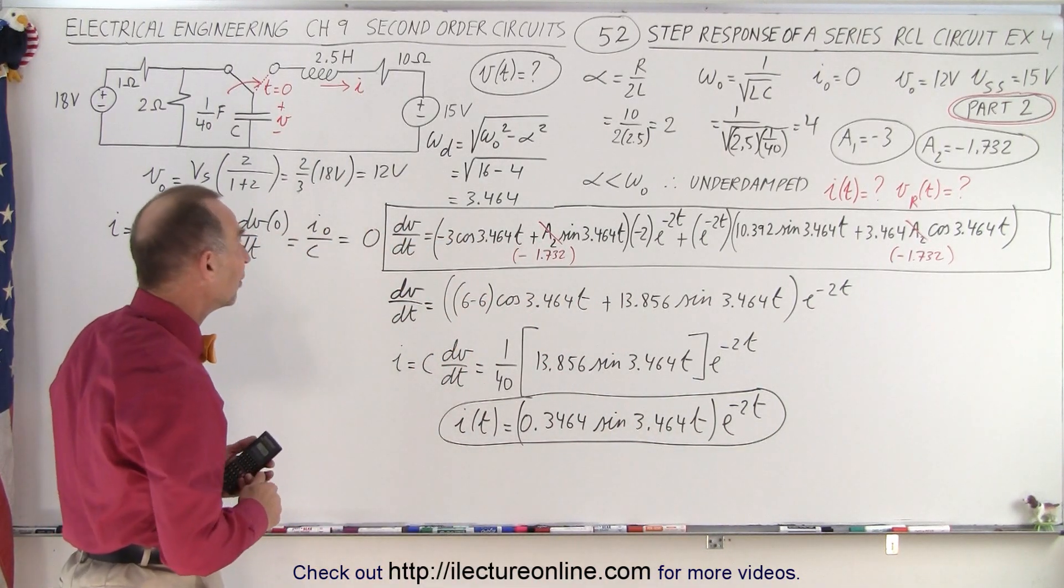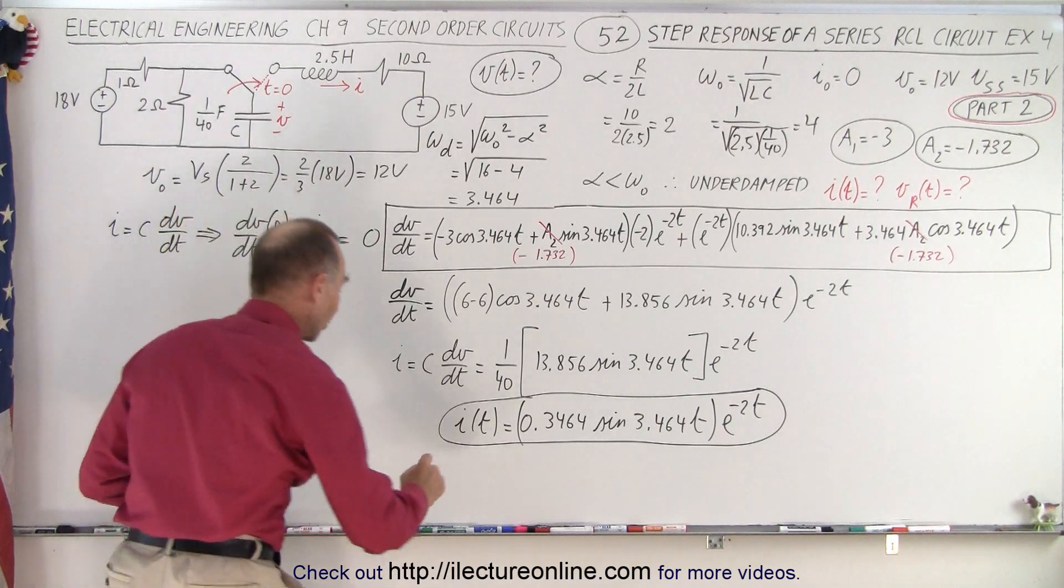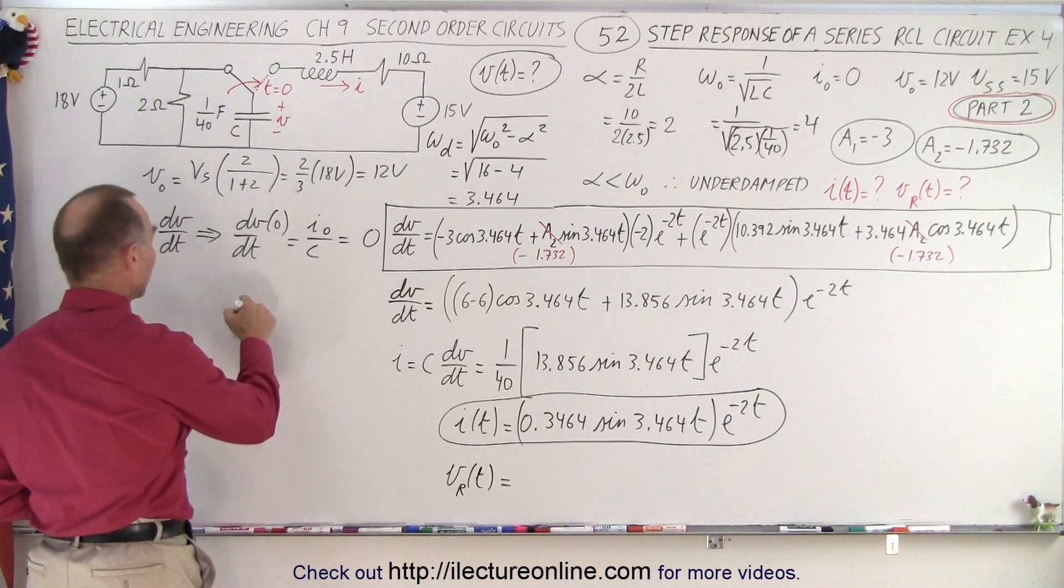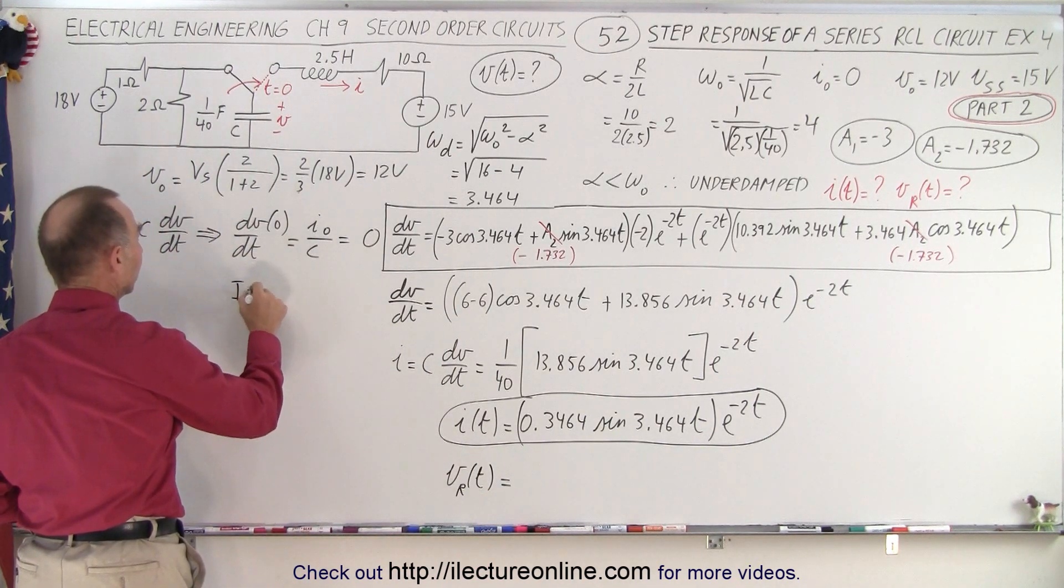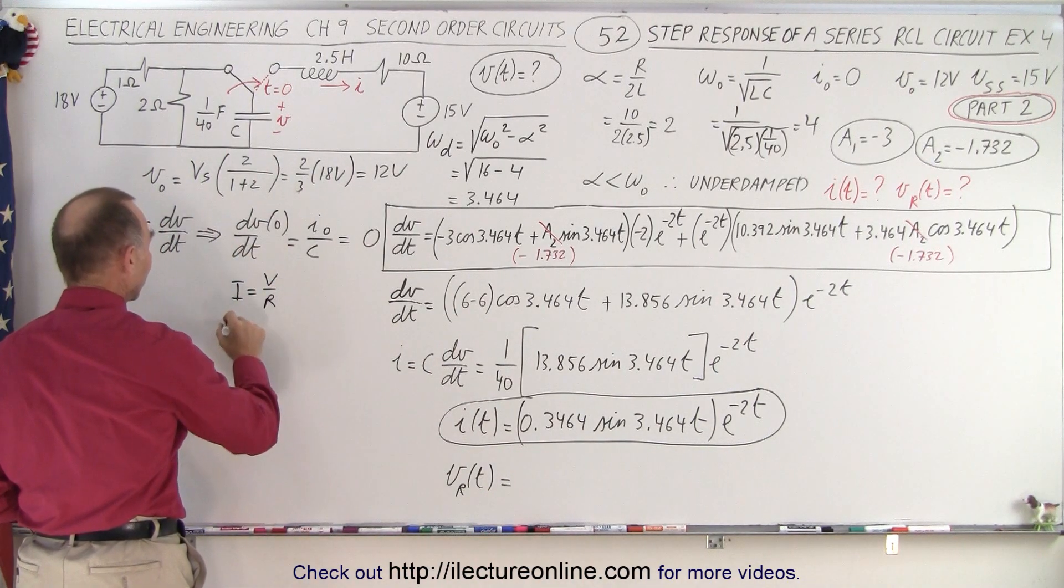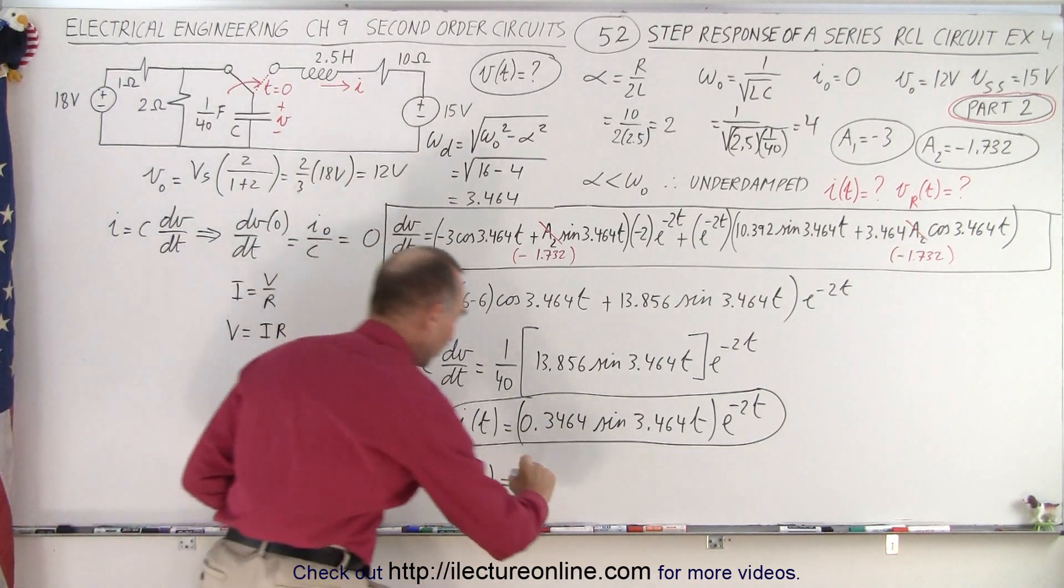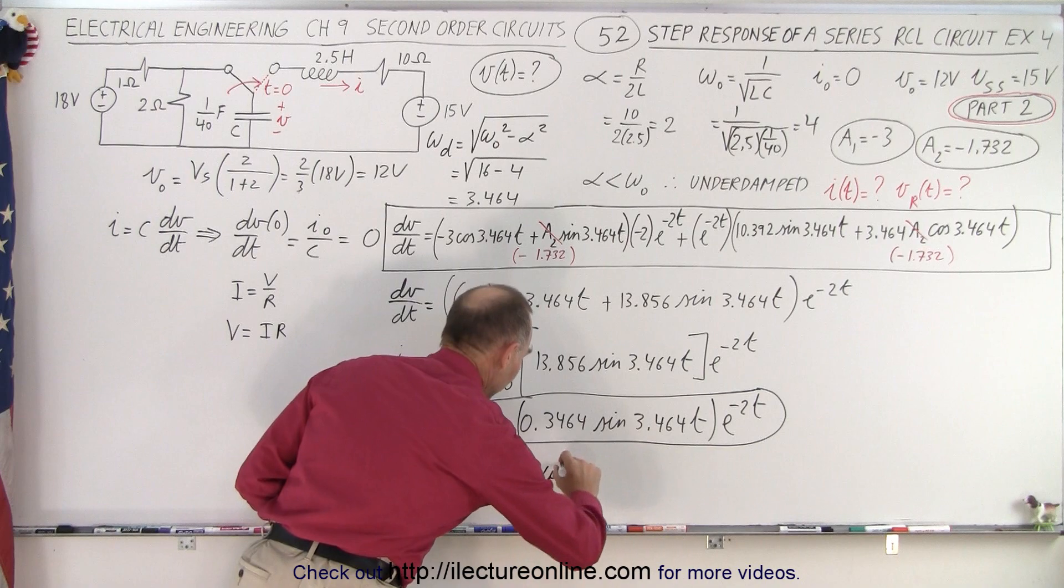Now we need the equation for the voltage across the resistor as a function of time. Using Ohm's law, we can write that the current equals V over R, which means that the voltage equals I times R. So we have to multiply the current times the resistance.